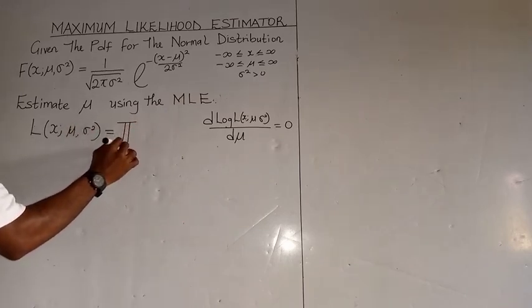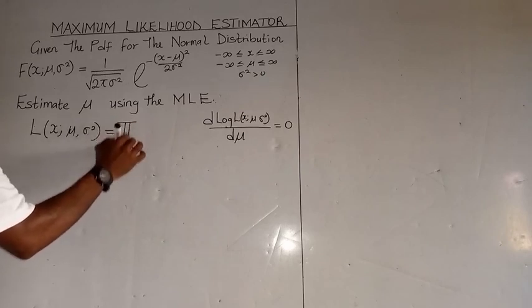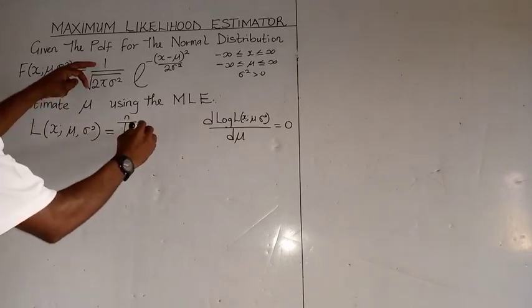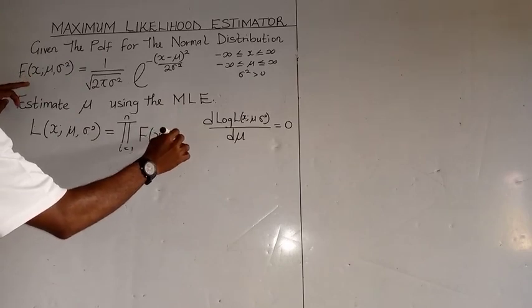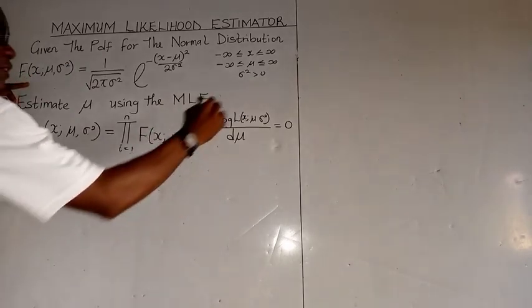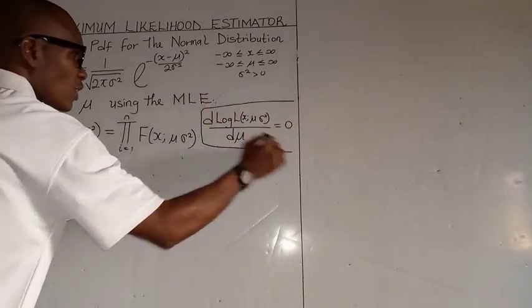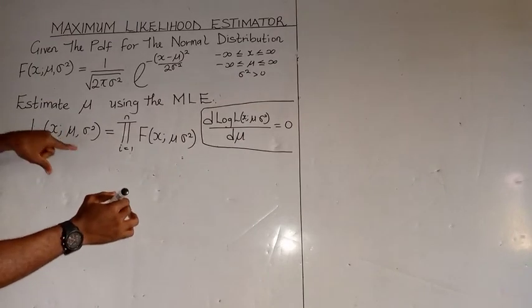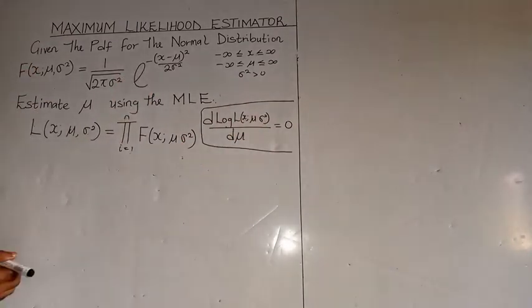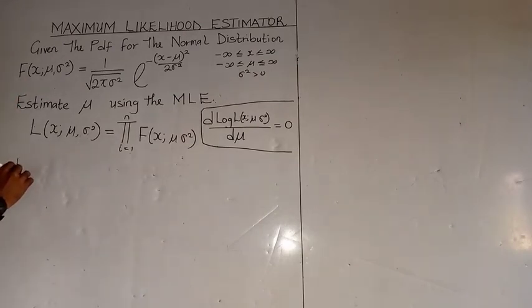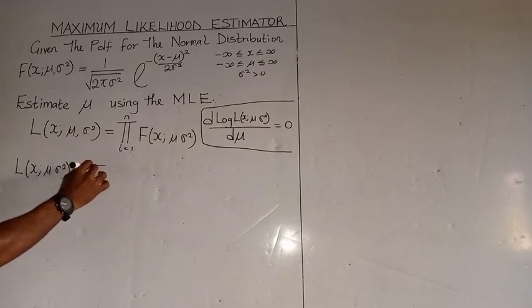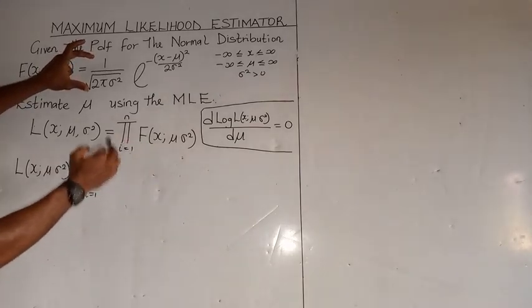We know that the likelihood function for the mean and the variance is equal to the product from i equals 1 to n of the function f of x given mean. To obtain the solution, we have to take the differential of the log of this function.